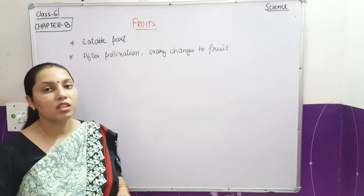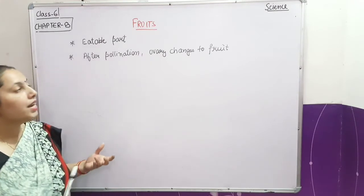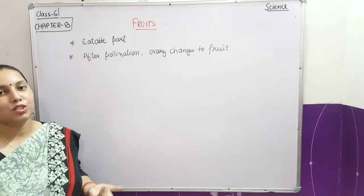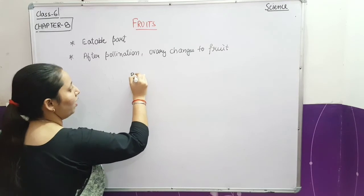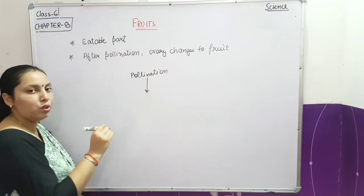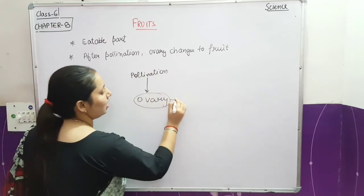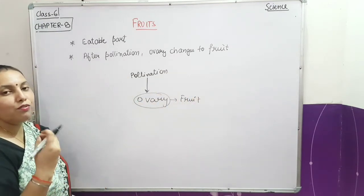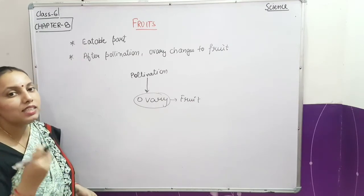The next part of the plant is fruits — the delicious and edible part of the plant. How are fruits produced? After pollination, the ovary changes into a fruit. The pollen grains transfer to the ovary, and this ovary changes into a fruit. Examples of fruits include cherries, apple, and watermelon, and you can also see the seeds inside them.